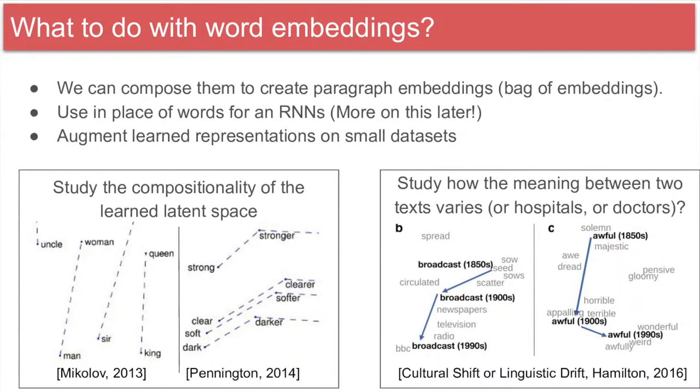On the lower right, we can see how the representation of a word broadcast changed between 1850 and 1990. This corresponds to how we think about this word. Imagine if this instead represented a drug over time to observe off-label use, or how a disease changed over different geographic environments. These experiments could be very interesting applications to the medical field, but this has largely been unexplored.